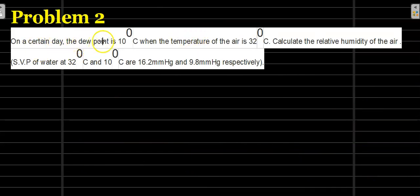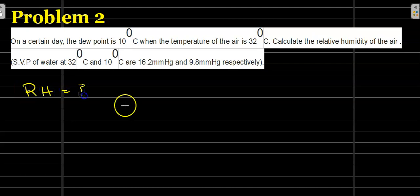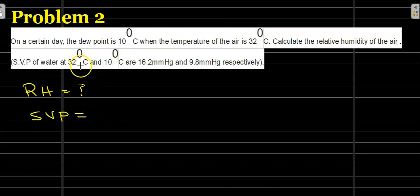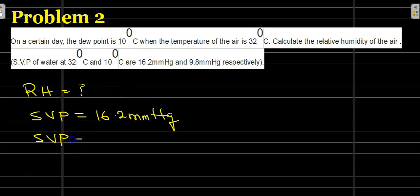On a certain day the dew point is 10 degrees Celsius, and the actual temperature of the air is 32 degrees Celsius. Calculate the relative humidity of the air. To do this, we note that the SVP at 32 degrees Celsius is 36.2 mmHg, and the SVP at 10 degrees Celsius is 9.8 mmHg.